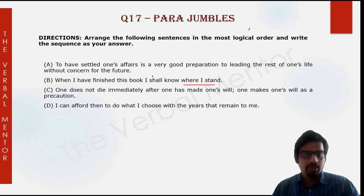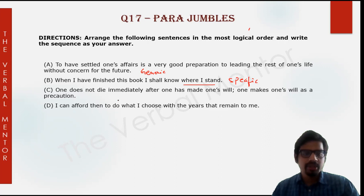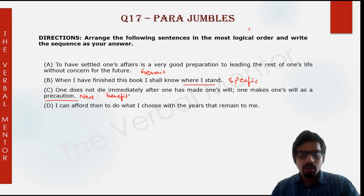Sentence A is generic in nature while B is specific to the author, to the narrator. Sentence C says: 'One does not die immediately after one has made one's will — one makes one's will as a precaution.' Now the next sentence should tell you about the benefits of being cautious.